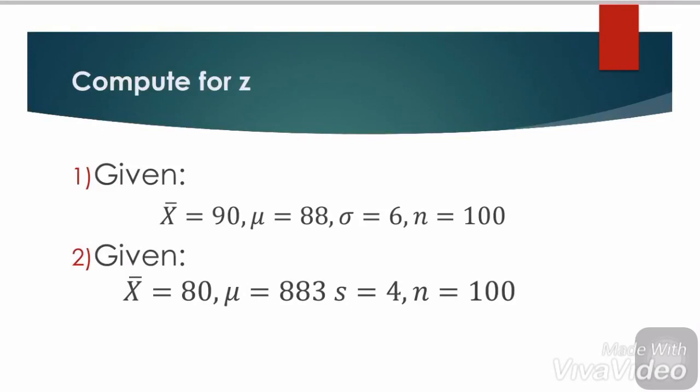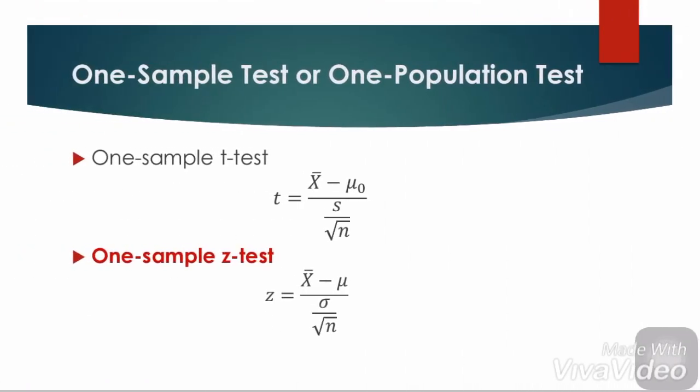Since the sample size is 100 and it's more than 30, it's considered large. Therefore, we use the formula for one sample Z test.